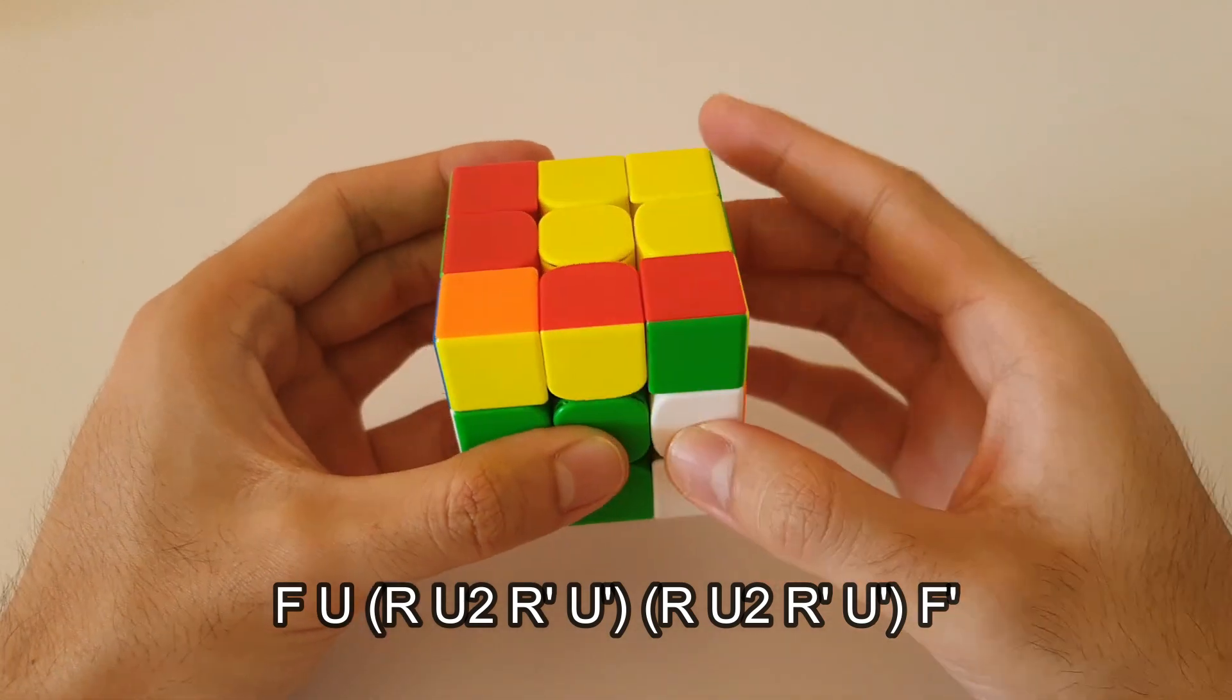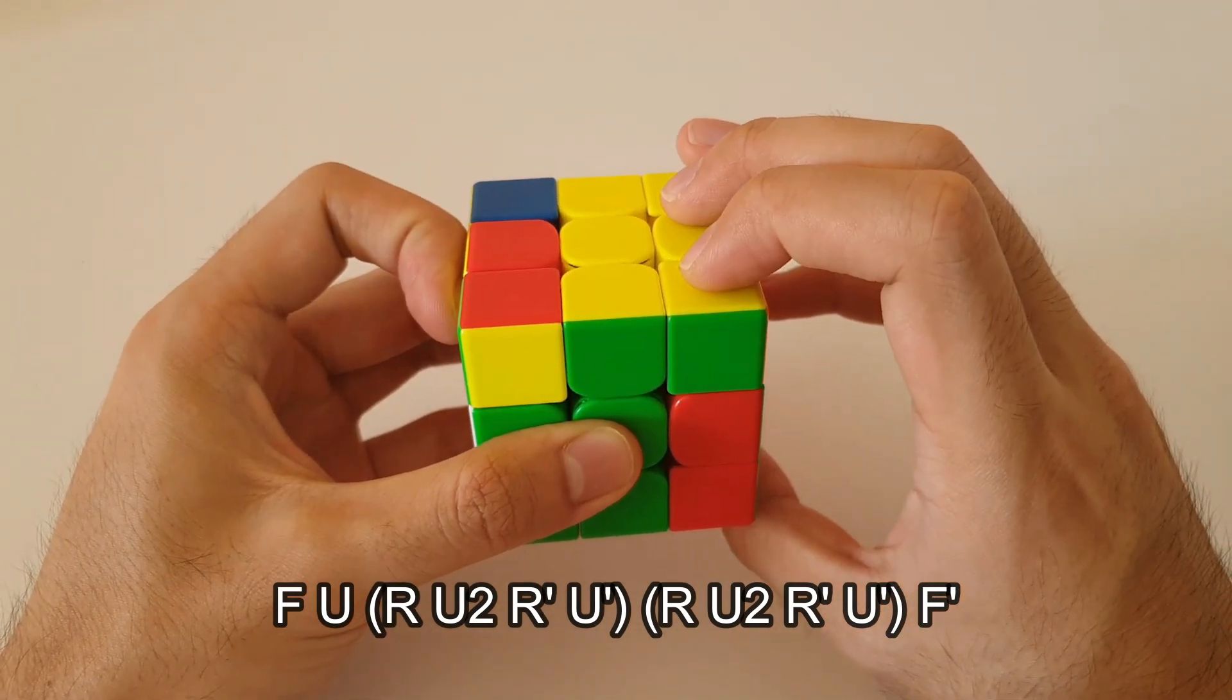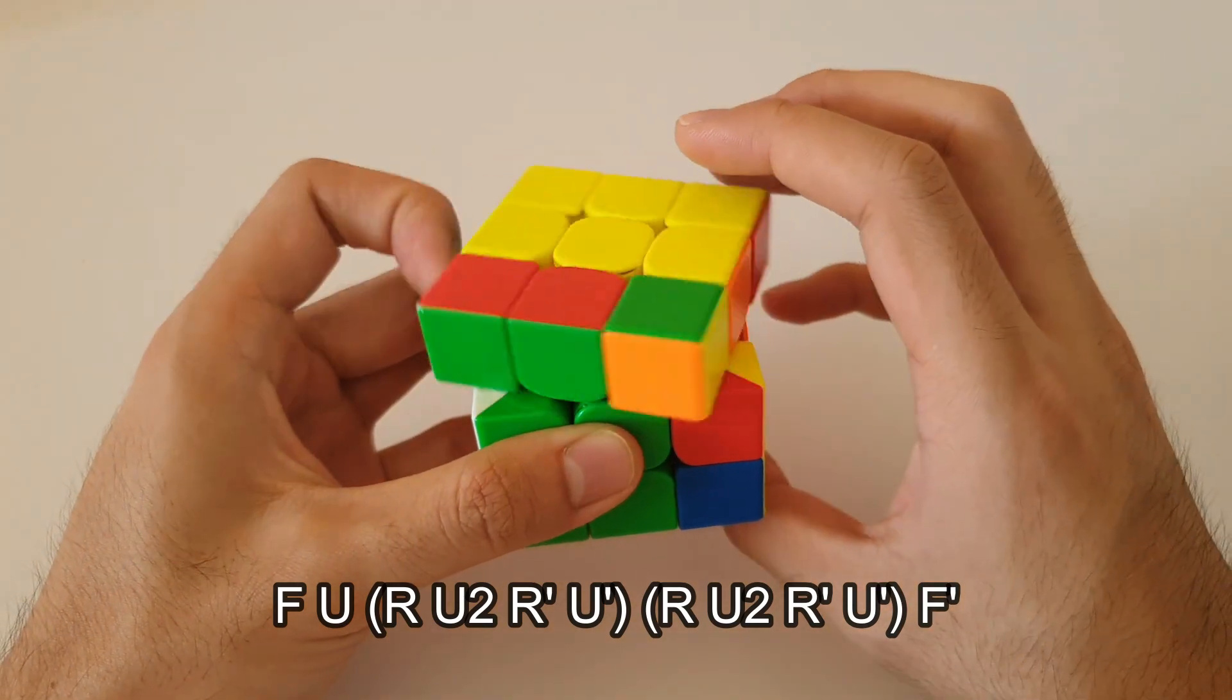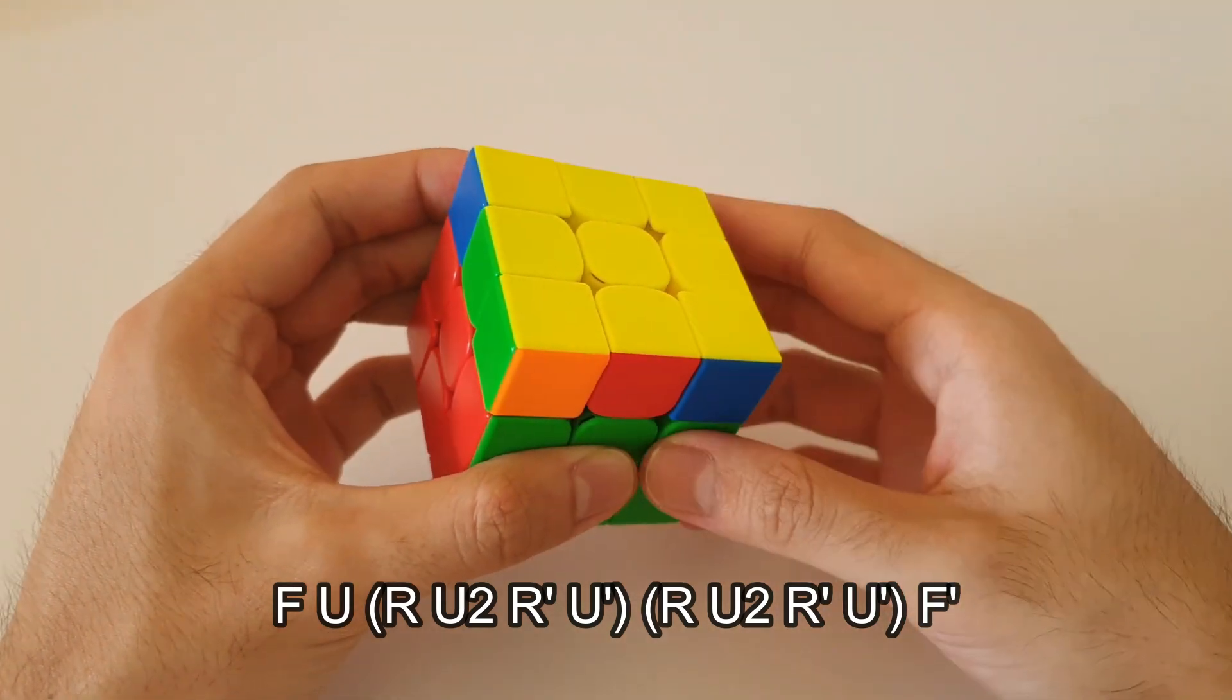Following that, R, U2, R' U'. Do that again. So R, U2, R' U'. And finally, just end off with an F', and there's your algorithm.